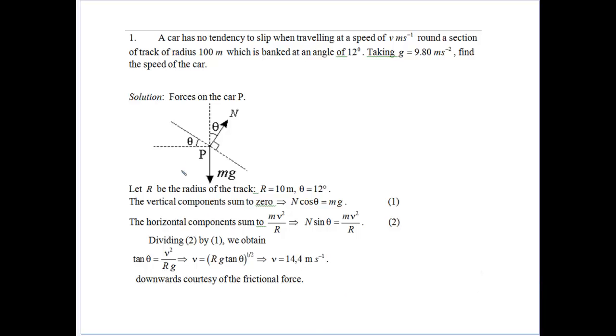So we're looking at some questions here. The first one we've got, we've got a car travelling at V meters per second around a section of bank track, which has a radius of 100 meters and it's banked at an angle of 12 degrees. We're going to take gravity as 9.8, we want to find the speed of the car, we want to find V.